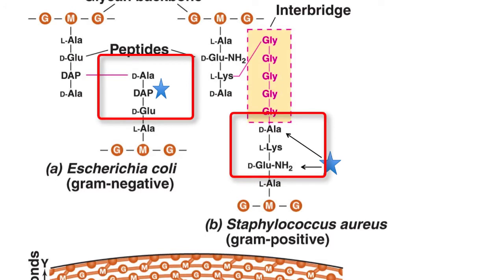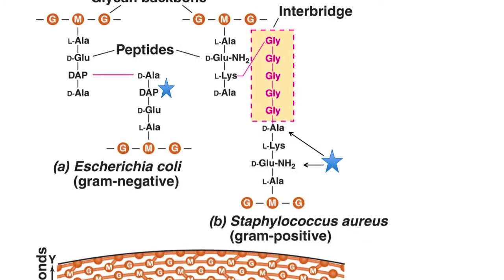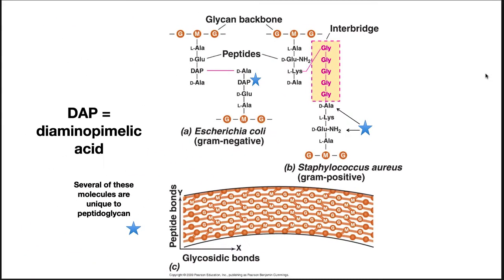Note how two of the amino acids in the peptidoglycan are unique: D-alanine and meso-diaminopimelic acid. DAP is unique to bacteria. D-alanine is the opposite chiral form of the typical L-alanine that's used in proteins.